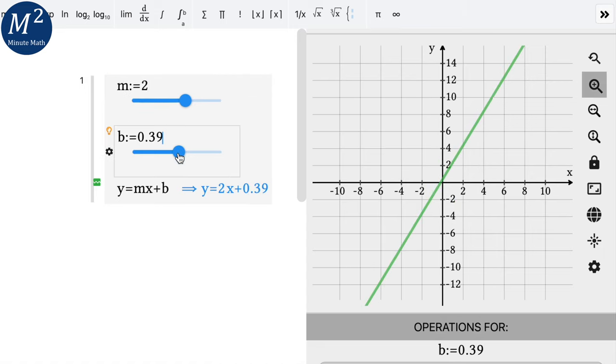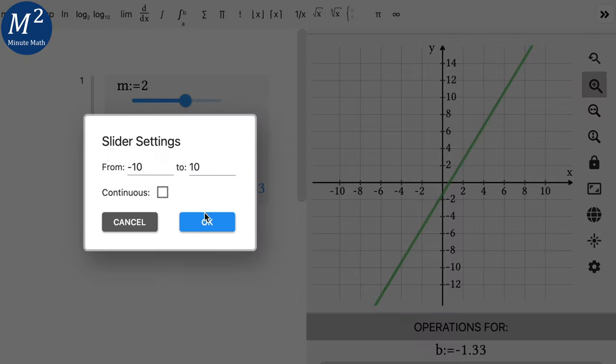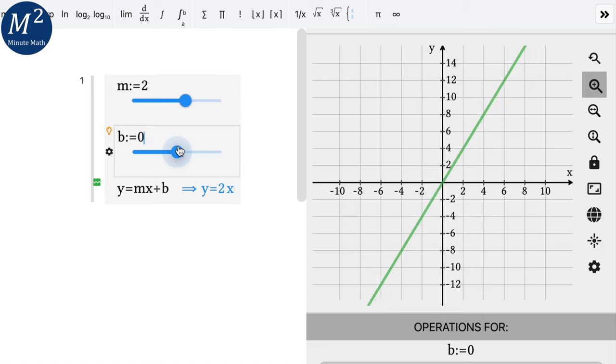What about the b value? First notice here if I move it around, notice my slope is two, my b value increases. The line has the same slope but we go up and kind of down with it where it crosses the y axis. Again I'm going to press the gear icon here and turn off continuous. And that way we move by units of one. Makes it a little easier to see.